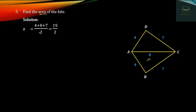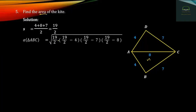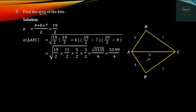Computing S and setting up Heron's formula with given values. We write S minus 90.2 times S minus 90.2 minus 4 times S minus B of 90.2 minus 8. This yields 3.2 and 3.2. The square root gives approximately 3,135,000 square root, around 55,999, or 9975 square units.